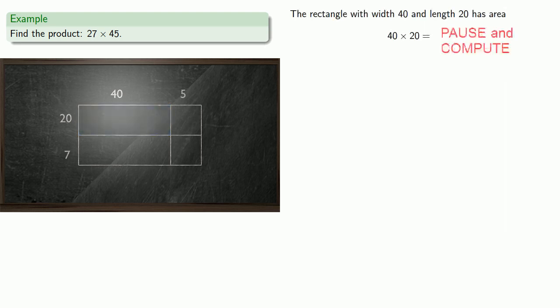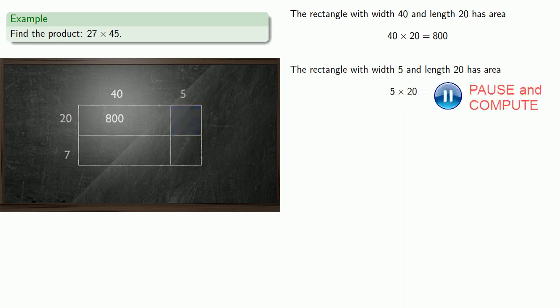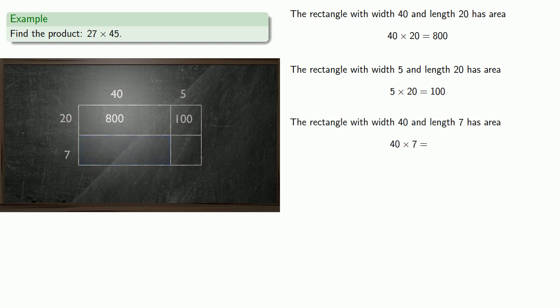So this rectangle with width 40 and length 20 has area 40 times 20. That's 800. The rectangle with width 5 and length 20 has area 5 times 20. That's 100. The rectangle with width 40 and length 7 has area 40 times 7, or 280. And this rectangle with width 5 and length 7 has area 5 times 7, 35.